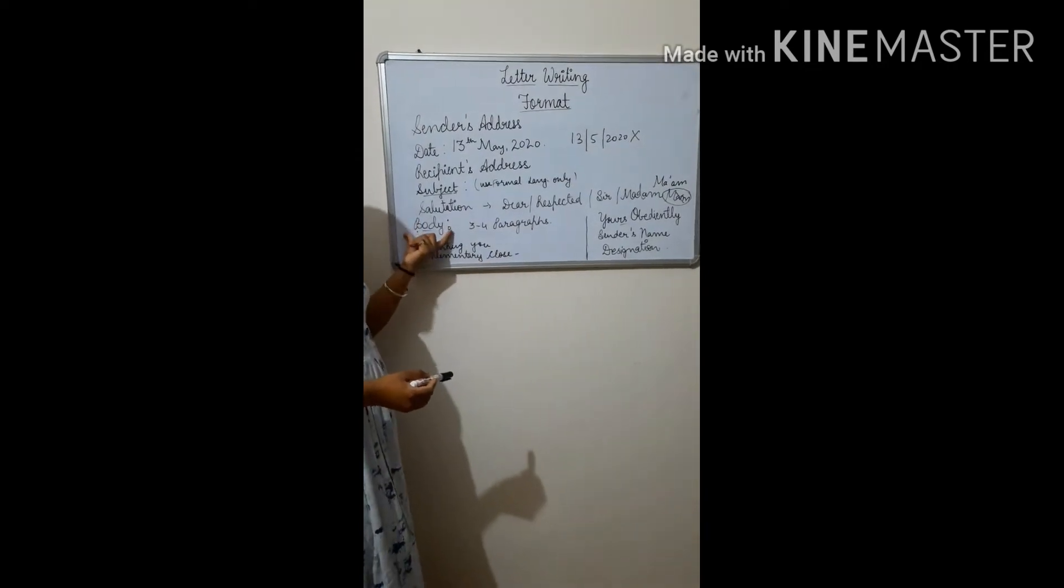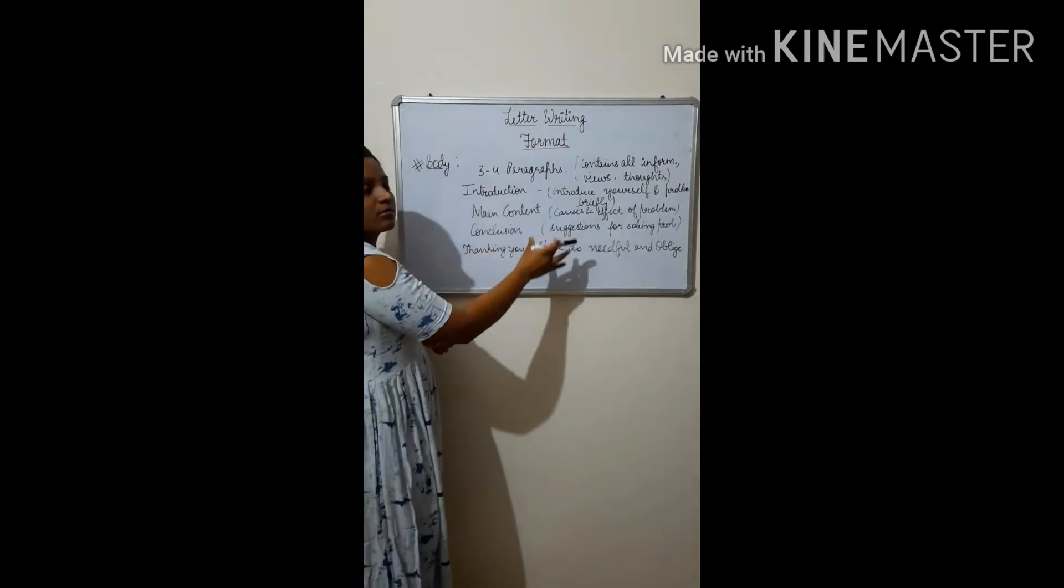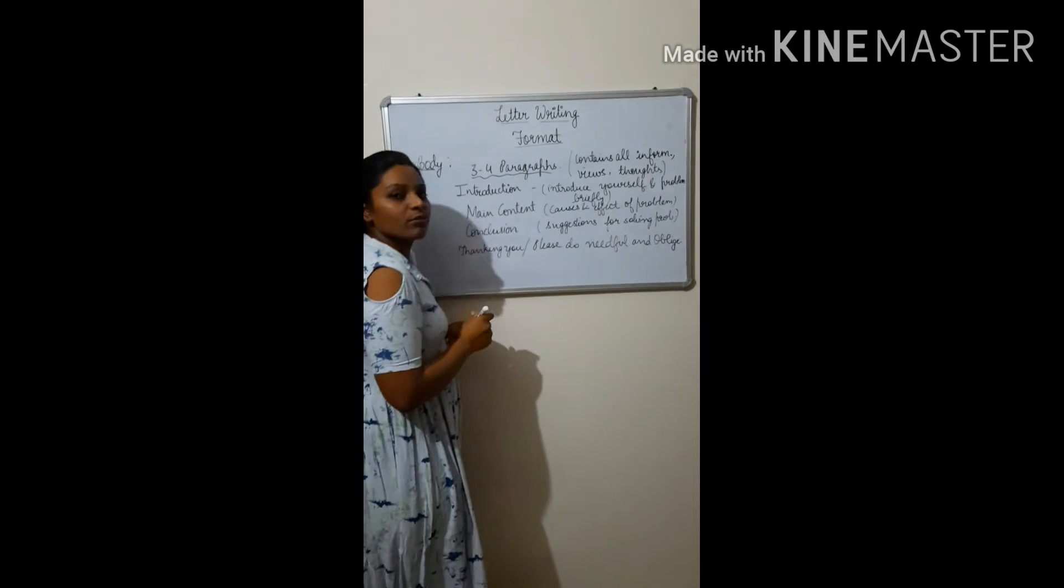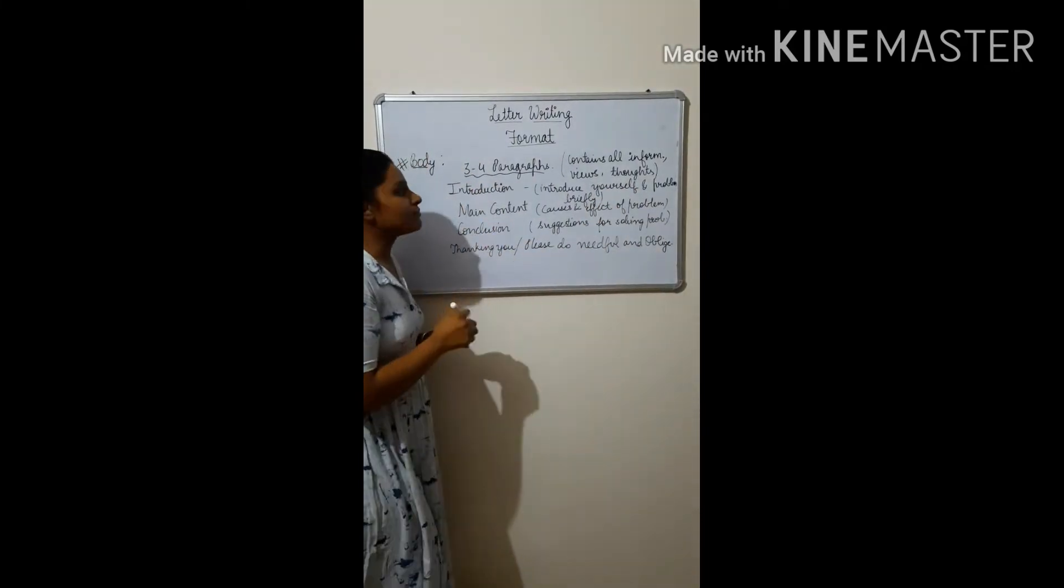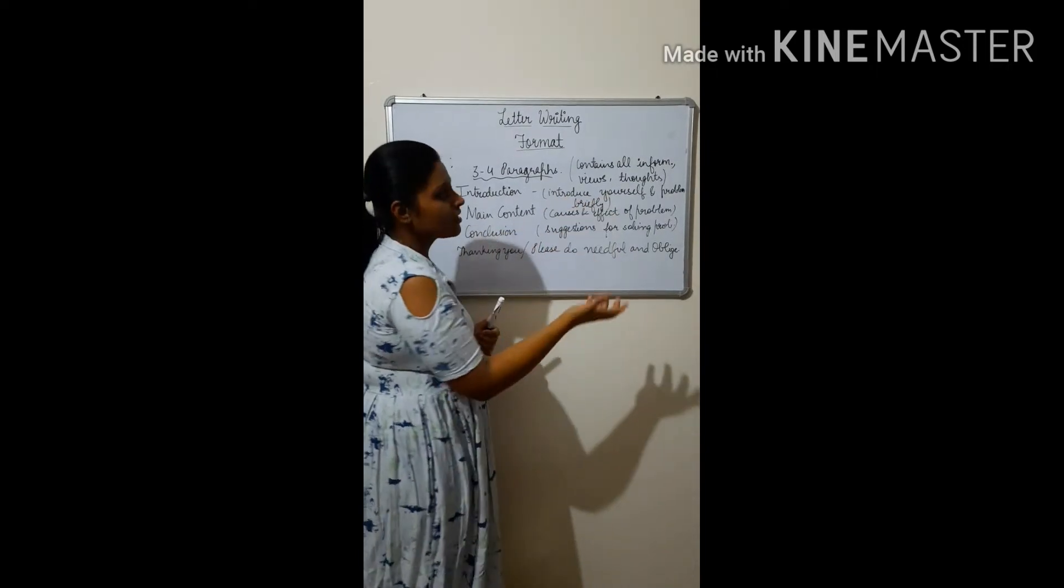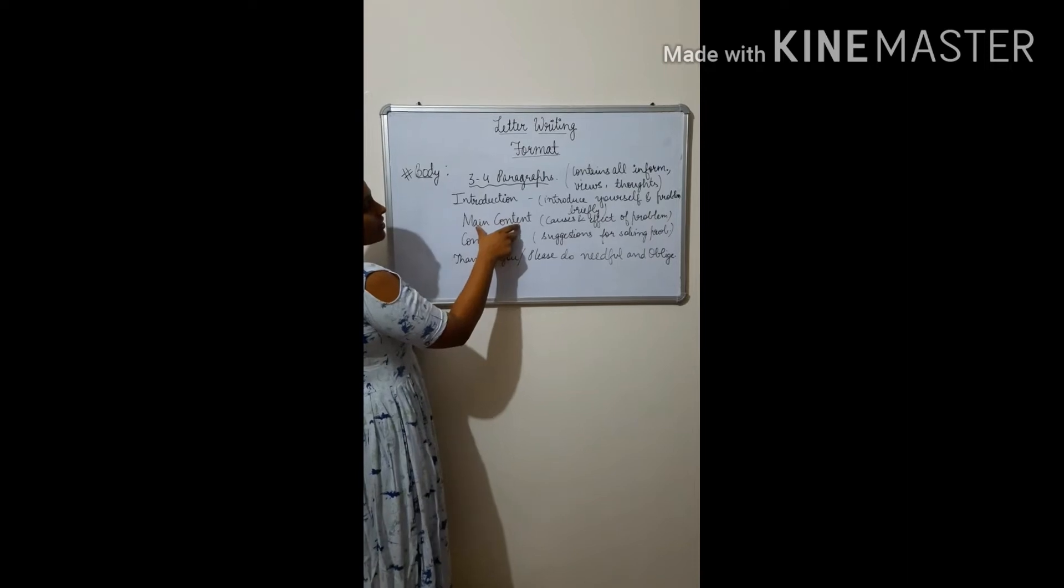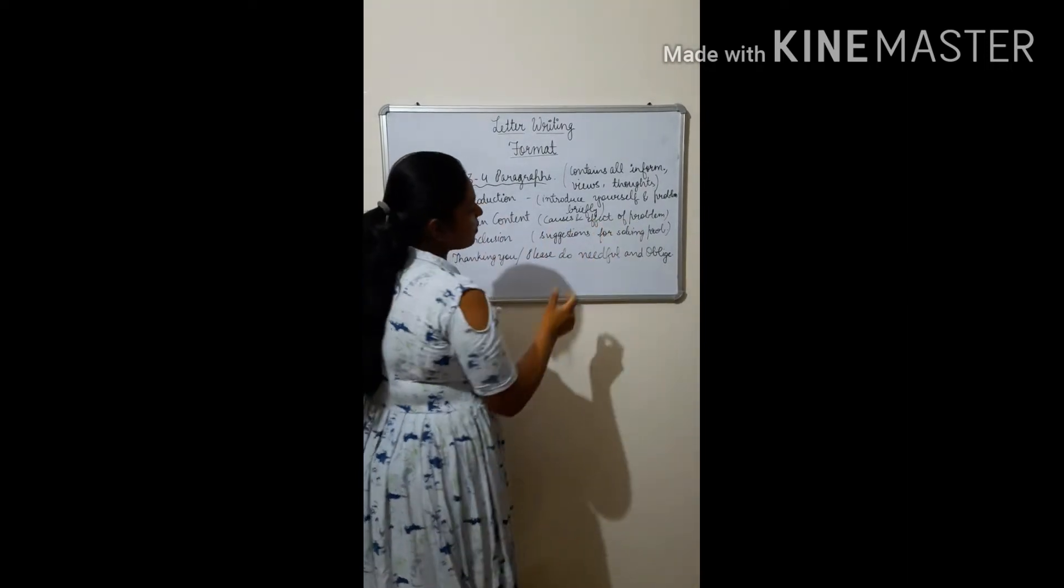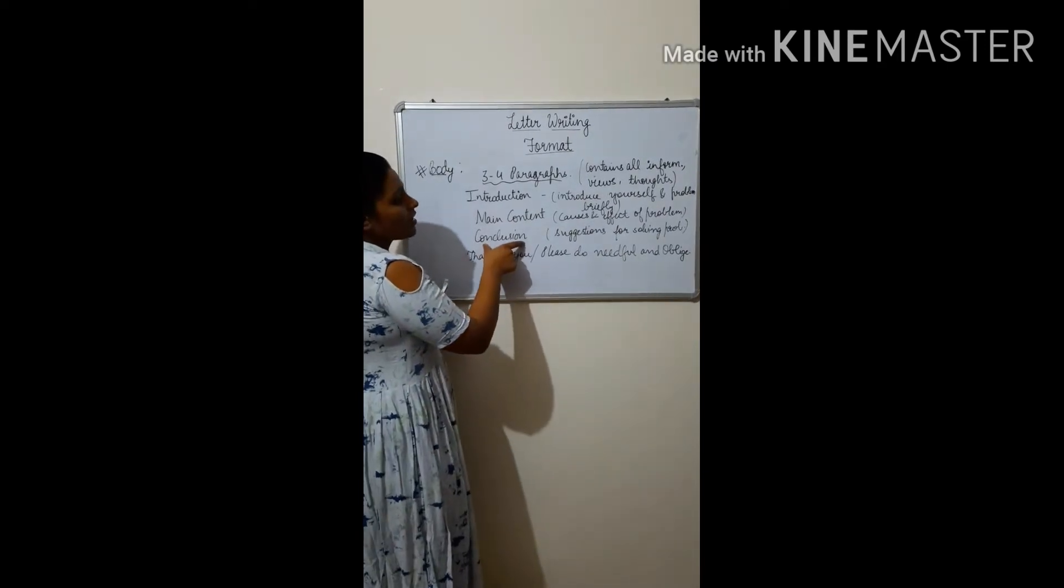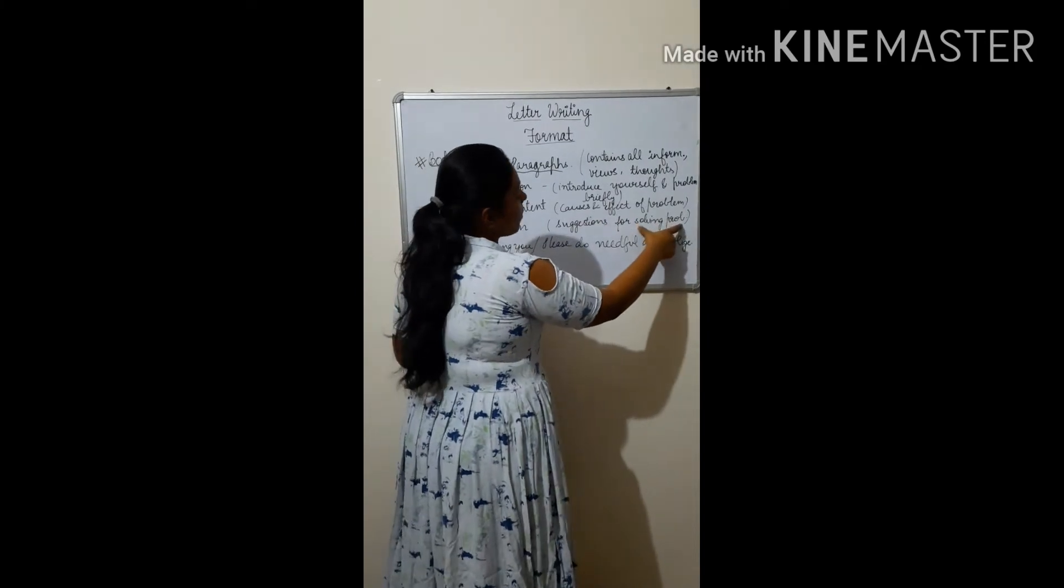Now, we will do only body. We will consider the steps including body. Here we will see how to frame the body of a letter. A letter should be written in three to four paragraphs always, which contain all information, your views, thoughts about the problem. First of all, in first paragraph, you have to mention introduction, in which you have to introduce yourself, who you are, and what is the problem. Should be in brief, few words, in one or two lines. Then after that, you should mention main content. Main content includes causes and effect of problem. What is the cause of problem and what are effects of problem?